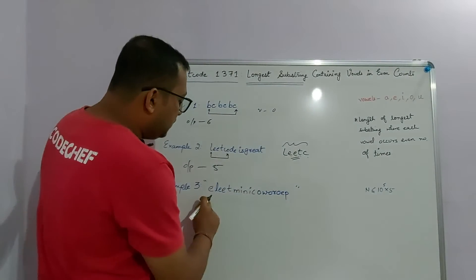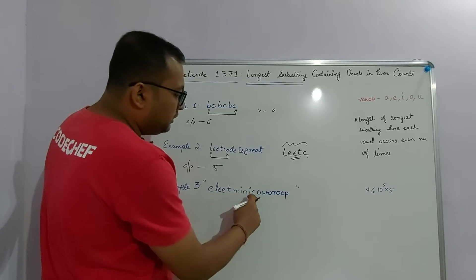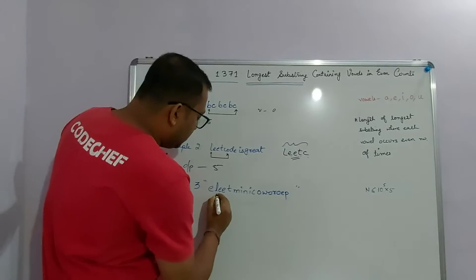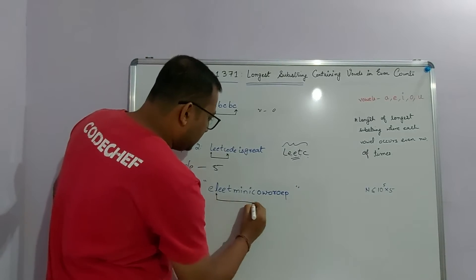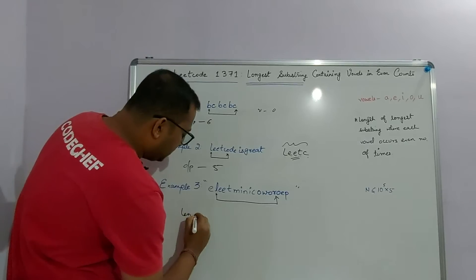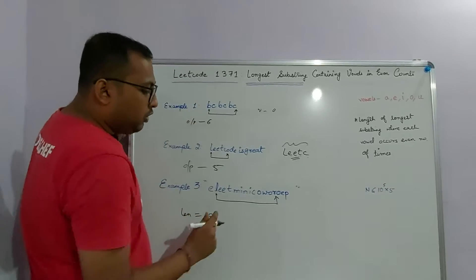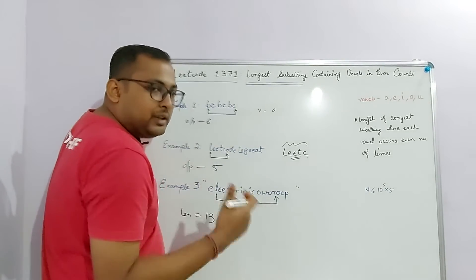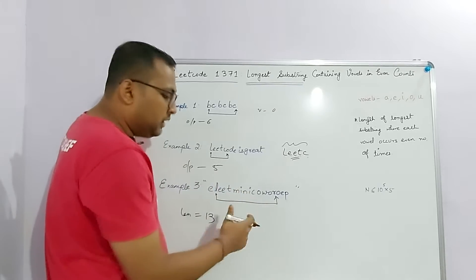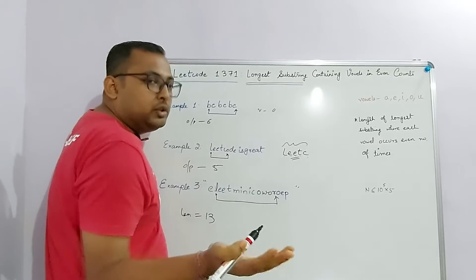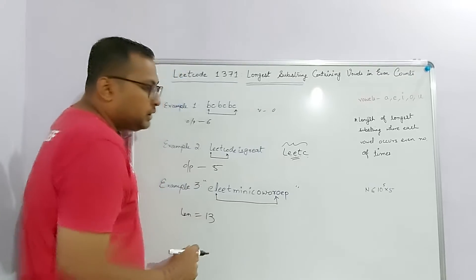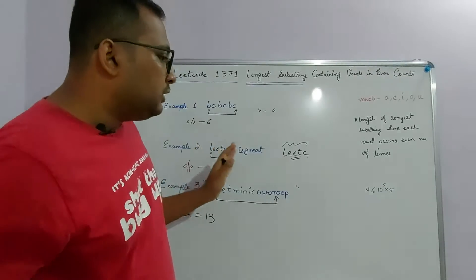Let's see the third example. We are given the string 'ELWTMINICOWROEP'. If you take the substring from the beginning to the character R, the length will be 13, and all the vowels in this range have occurred an even number of times. If you try a larger substring, it won't have all vowels even, so this is the optimal answer.